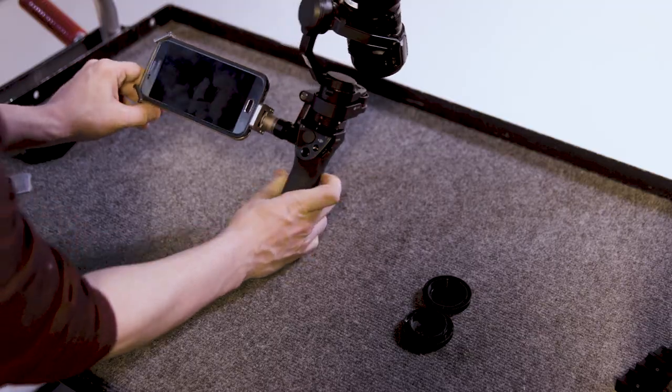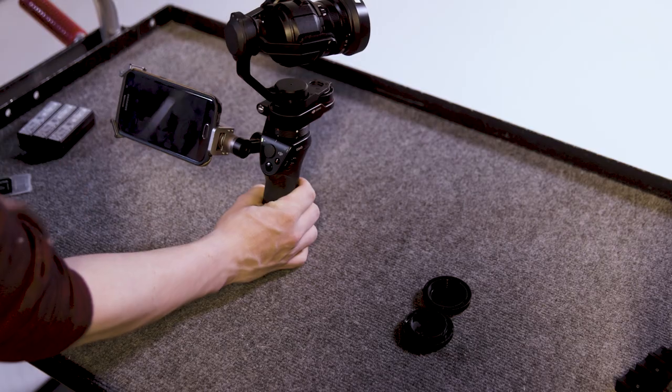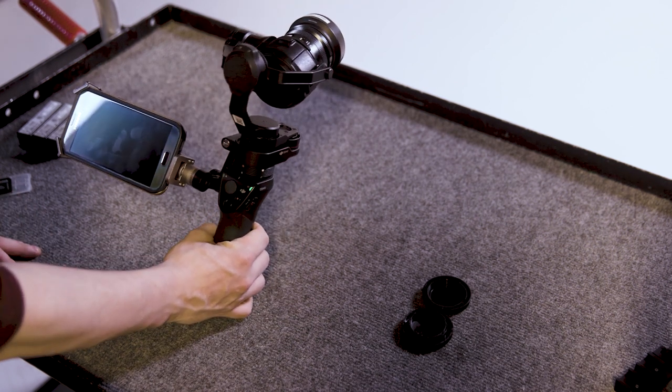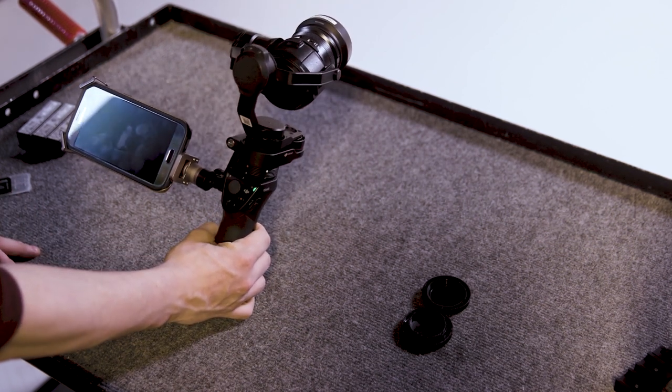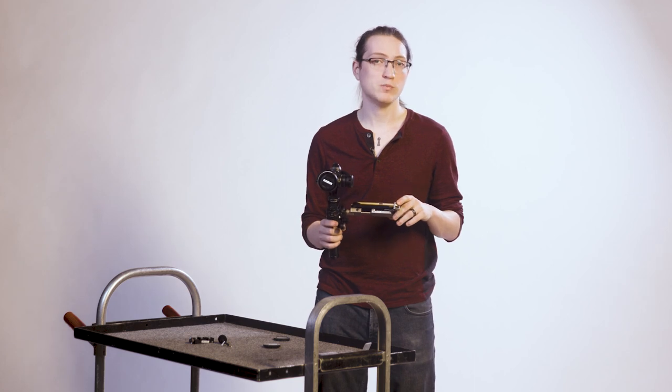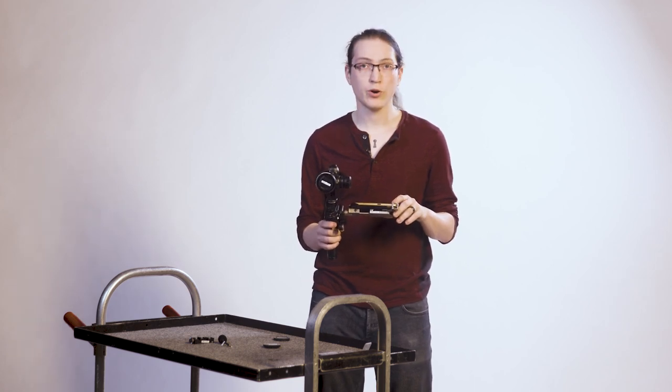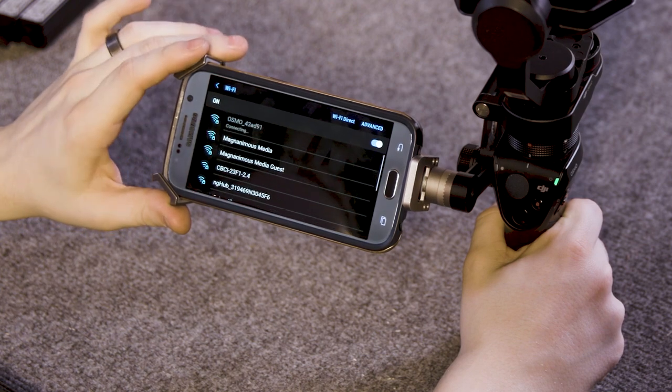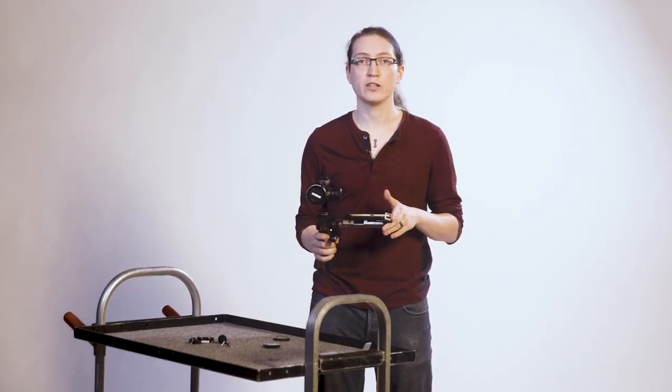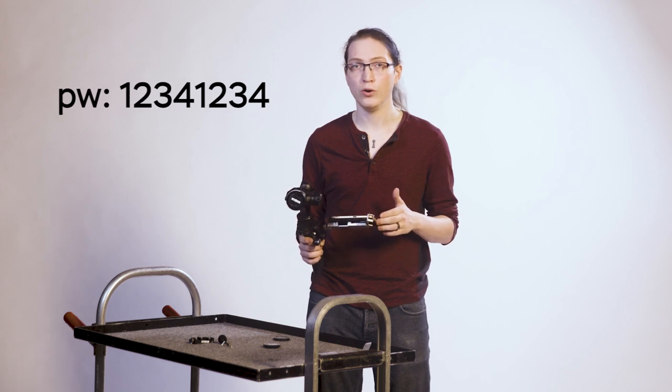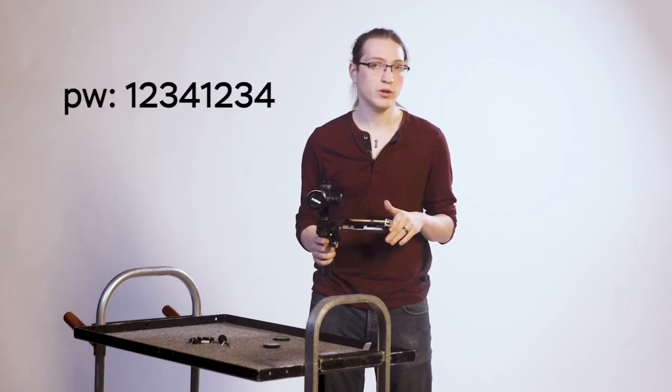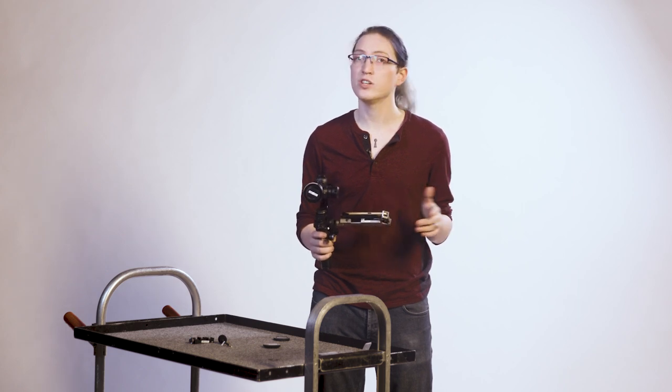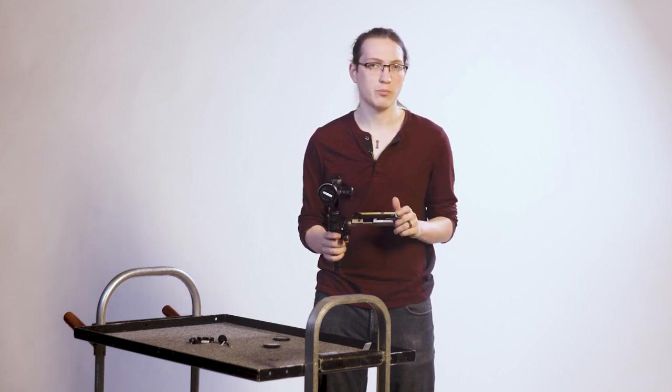To boot up the Osmo, hold down the power button on the side. You will hear a beep when it boots on. We can now connect to the Osmo's WiFi. On your phone, open up the WiFi connections menu and you will see a WiFi network called Osmo underscore and a series of numbers. Select the Osmo WiFi and the default password will be 12341234. Your phone will likely warn you that you will not have internet access. Just hit OK, we won't need access to operate the camera.